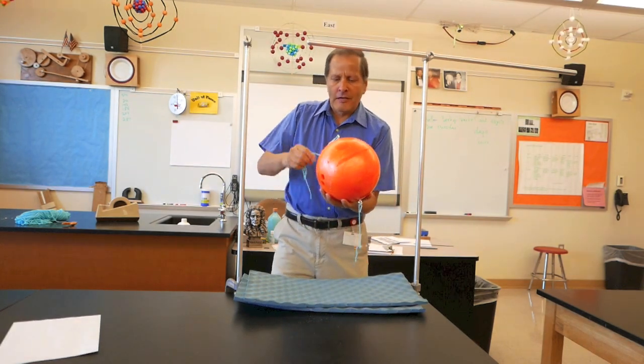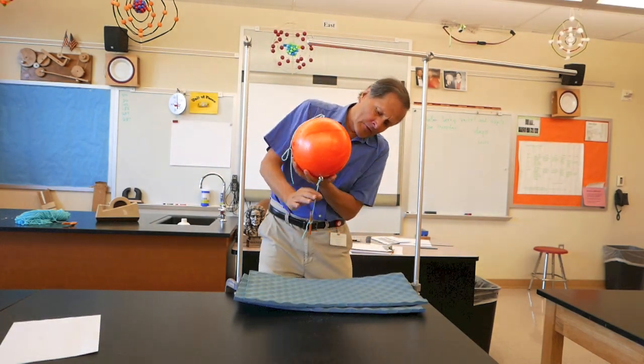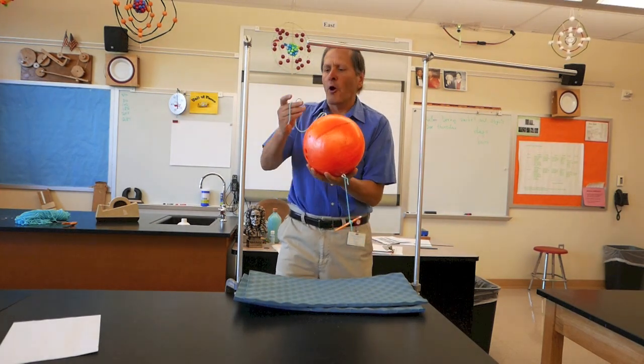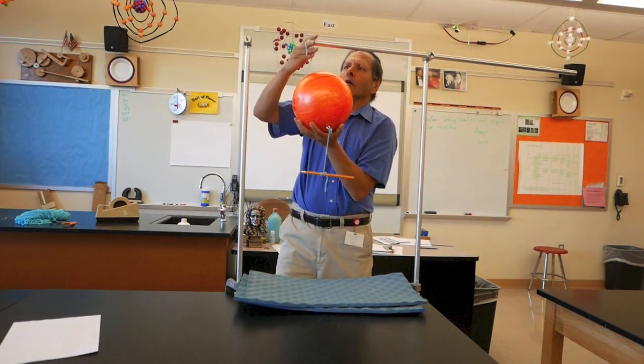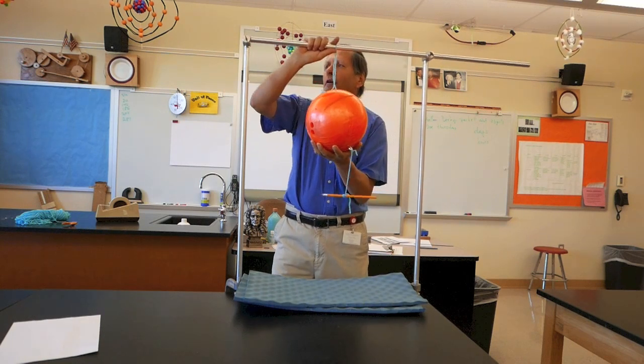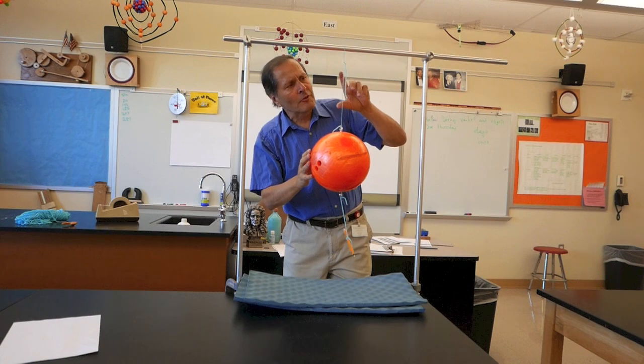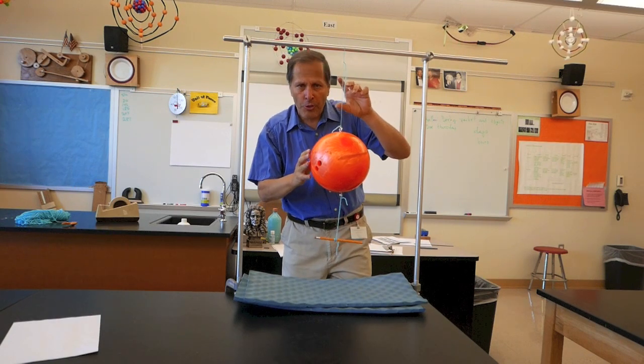Now I have this bowling ball and it's got a string attached to the top of it and a second string hanging out the bottom of it. And what I want to do is support it on this metal bar. There we go. And as I hang it down, the first thing I notice is that this string is stretched very, very thin.